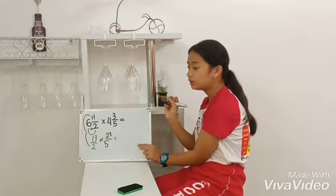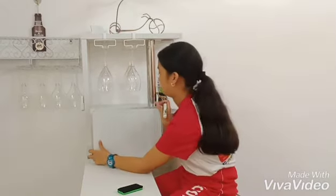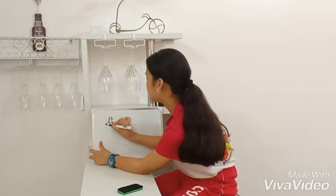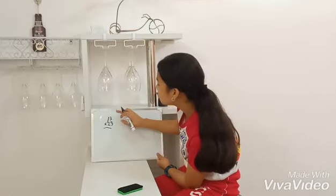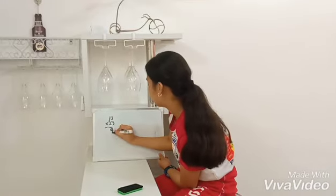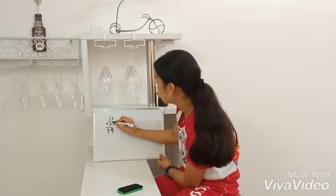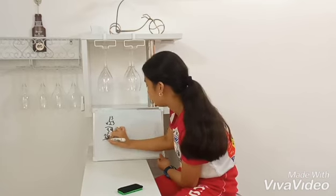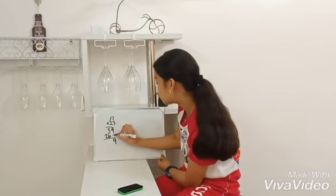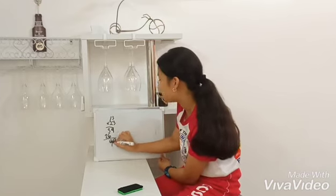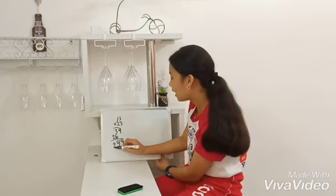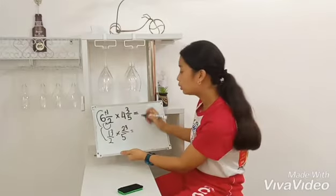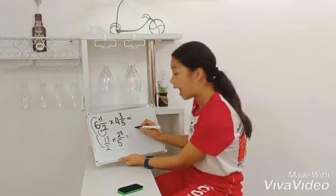And we multiply it: 13 times 23. 3 times 3 equals 9. 3 times 1 equals 3. 2 times 3 equals 6. And 2 times 1 equals 2. Bring down 9. 6 times 3 equals 9. And bring down the number 2. So we have the answer: 299. 299 will be our numerator.